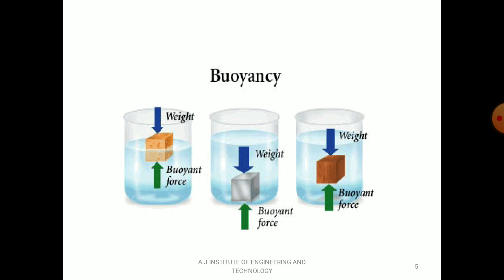As you can see here, weight is acting in the downward direction and buoyant force is acting in the upward direction. From this diagram, we can conclude that buoyant force is equal and opposite to the weight of the body.